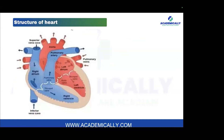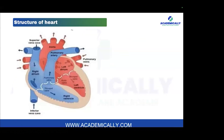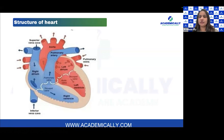In the heart there are four different chambers: we have the right atrium, right ventricle, left atrium, and left ventricle. These are the four different portions in the heart. Remember the four chambers: right atrium, right ventricle, left atrium, and left ventricle.